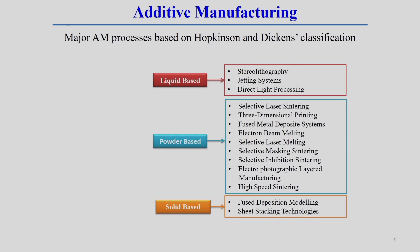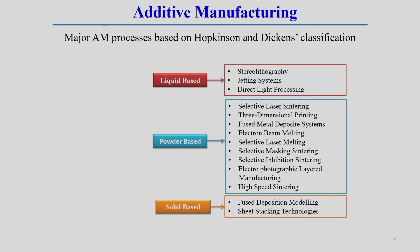In liquid-based additive manufacturing, processes include stereolithography and jetting systems such as direct light processing. The principle is to use a liquid raw material and focus a laser on it in a controlled way, so the material fuses at that particular position and gets the desired shape, while the remaining part stays as liquid. In powder-based AM, different variants exist depending on whether melting or sintering is followed.